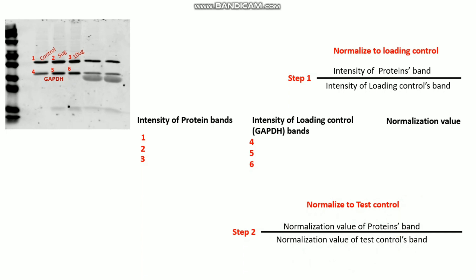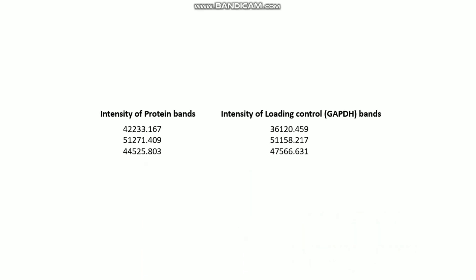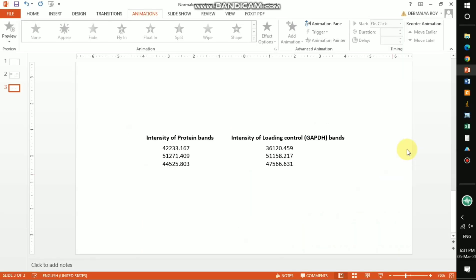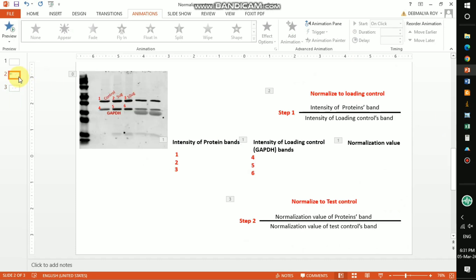Step two is to normalize to the test control. After getting the normalized-to-loading-control values, you use those to normalize to the test control by dividing each normalization value by the test control's normalization value.